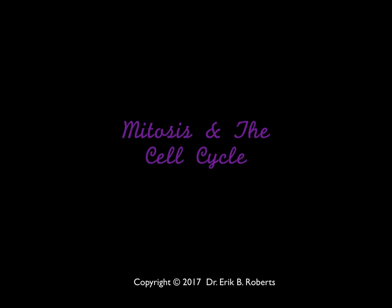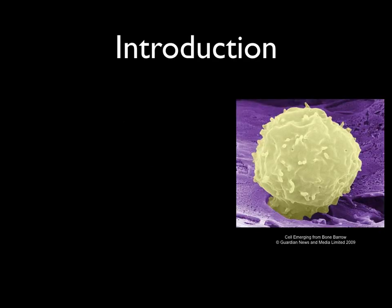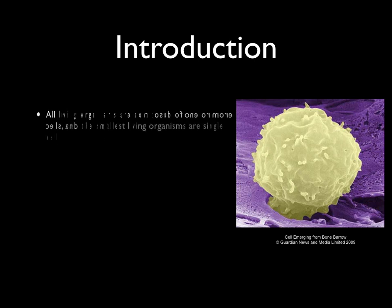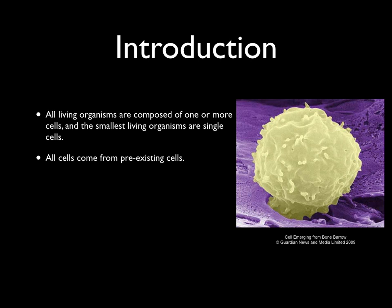Hello everyone and welcome to Lab 4, mitosis and the cell cycle. At this point in lab we've talked quite a bit about cells. Whether you took biology in high school or in college, one thing you should be familiar with from a general biology class is cell theory. Cell theory says that all living organisms are composed of one or more cells, and the smallest living organisms are single cells. In addition, cell theory also says that all cells come from pre-existing cells.